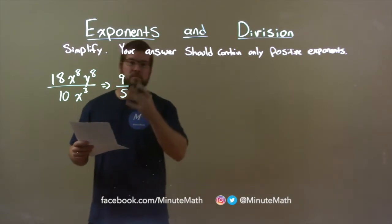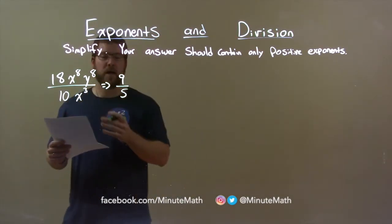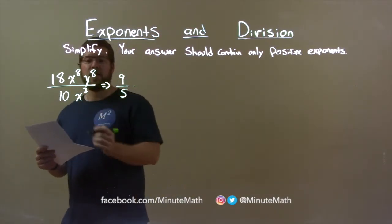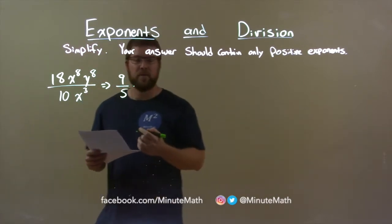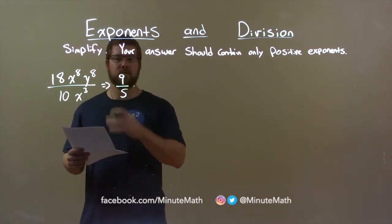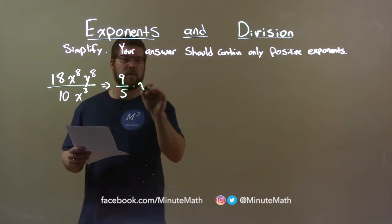From there, we need to simplify the variable x. So, x to the 8th power over x to the 3rd power. When we divide variables at the same base, we subtract the exponents. So, x to the 8th minus 3 power.